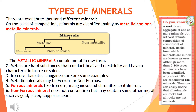A rock is an aggregate of one or more minerals but without a definite composition of minerals. Rocks from which minerals are mined are known as ores. Although more than 3000 types of minerals have been identified, only about 100 are considered as ore. Thus, all minerals are found in rocks but not all rocks are minerals.